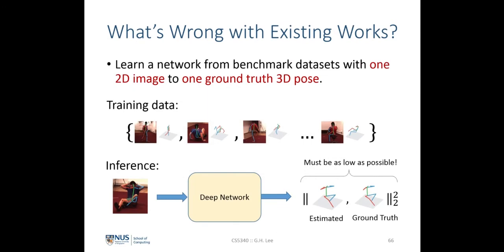A common thread between the one-stage and two-stage approaches is that they both achieve a one-to-one correspondence between input and output: given training data with an input 2D image or 2D pose and a ground truth output 3D pose, the network learns a direct mapping.